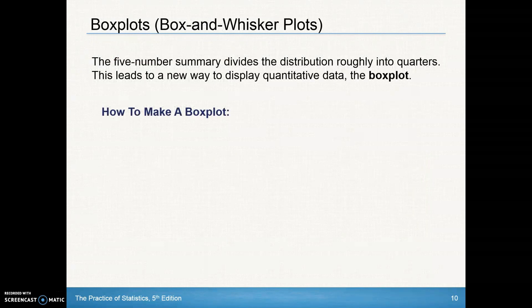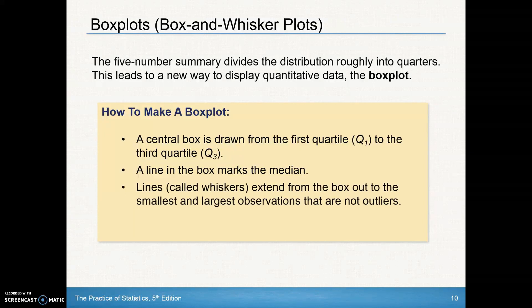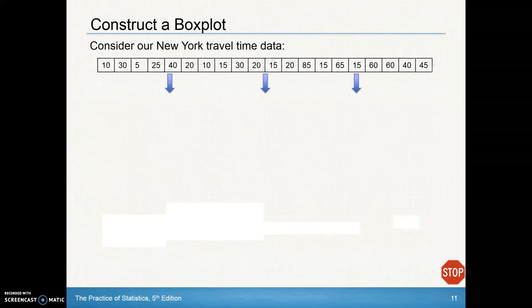It would be nice to have a graphical display of this, called a box plot, sometimes also called a box and whiskers plot. We make a central box drawn from the first quartile to the third quartile. We make a line in the middle of the box to mark the median. Then we extend lines called whiskers from the box out to the smallest and largest observations that aren't outliers. Outliers are usually marked with an asterisk, star, or X.